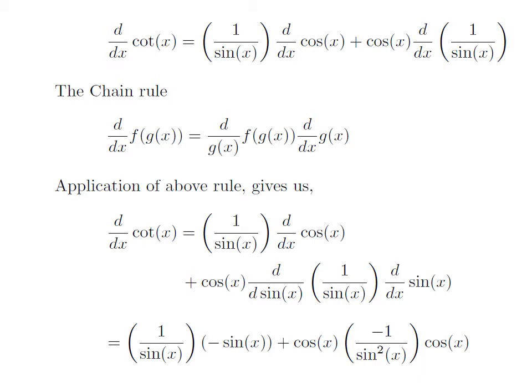So the derivation of cot(x) with respect to x is equal to 1 divided by sin(x) into minus sin(x), plus cosine of x into minus 1 divided by square of sin(x), into cosine of x.